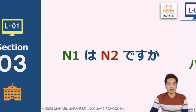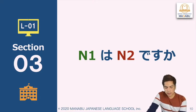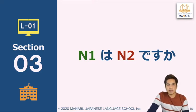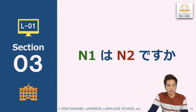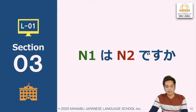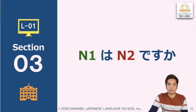Our third grammar point is Noun 1 wa, Noun 2 desu ka. Remember this sentence pattern is the same as our first grammar point — Noun 1 wa, Noun 2 desu — but this time we added the particle ka. This is a question marker, so we will ask if Noun 1 wa Noun 2 desu is correct or not. Let's look at the example.